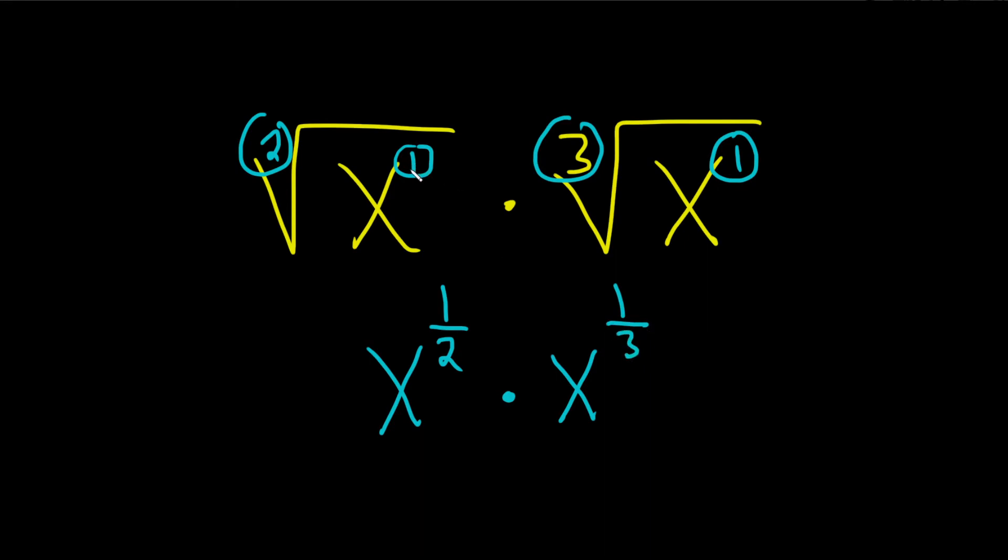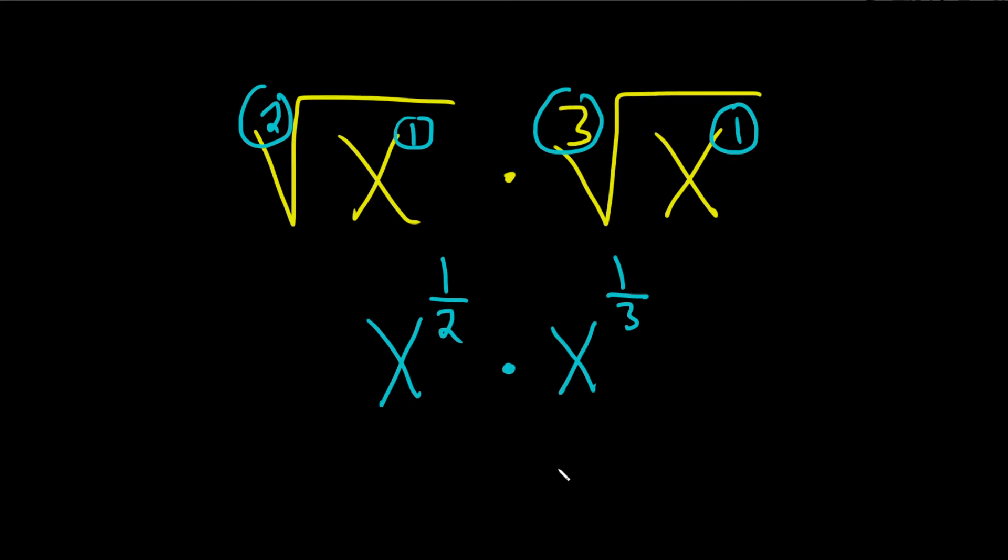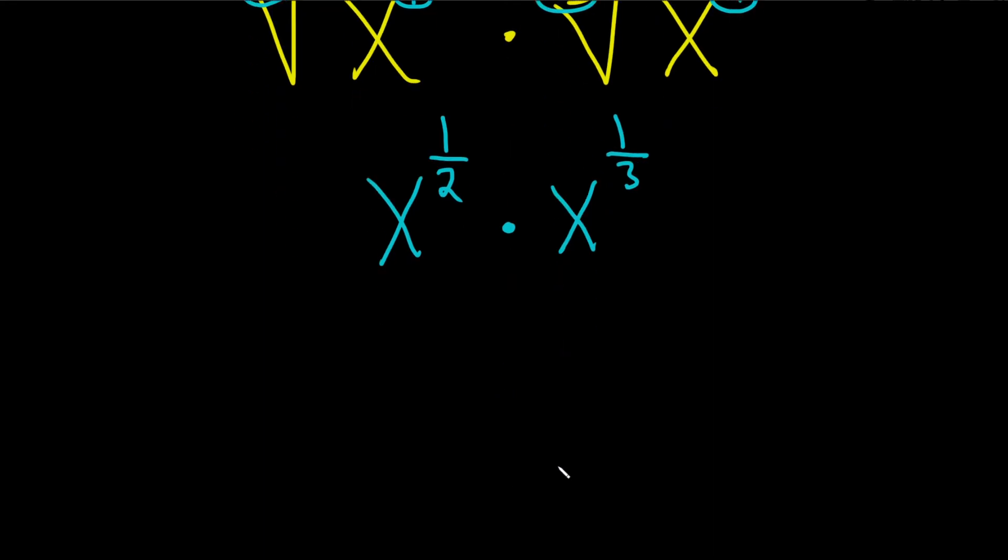So here it's 1 over 2, and here it's 1 over 3. So 1 over 2, 1 over 3, 1 over 2, 1 over 3. And now these are being multiplied, and the bases are the same. That means we add the exponents. That'll be x to the 1 half plus 1 third.